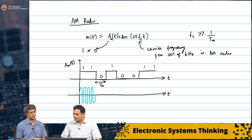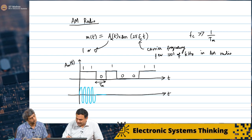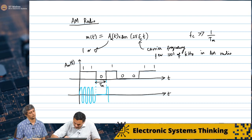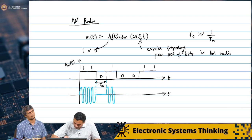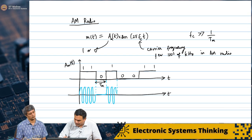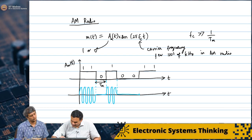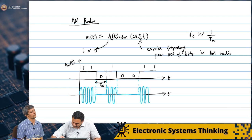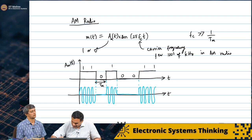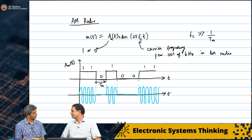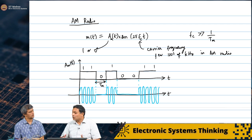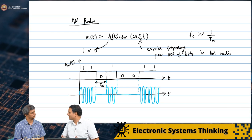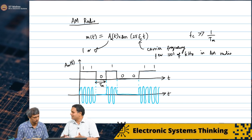And the minute it becomes 0, there is nothing. I will not get anything till I hit the next point, and then again I will get the sinusoid until it becomes 0 again. I see 0, and at this point you will start seeing the sinusoid again. So this would be one very rudimentary way of sending AM signals.